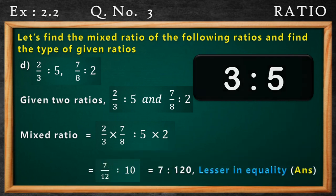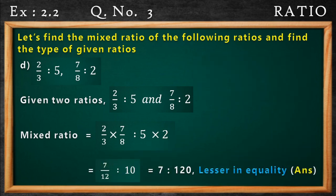Now let's get back to the question. There are two ratios given: 2/3 is to 5 and 7/8 is to 2. To mix the ratio, we have to multiply all the antecedents and keep them on the left side, and multiply all the consequents and keep them on the right side to make the new ratio. The antecedents are 2/3 and 7/8, and the consequents are 5 and 2.